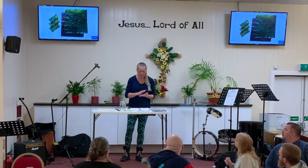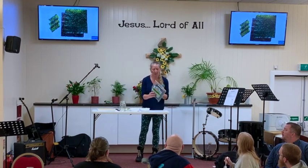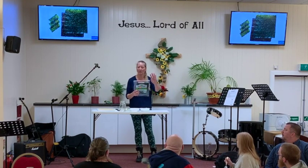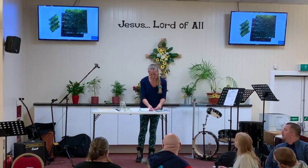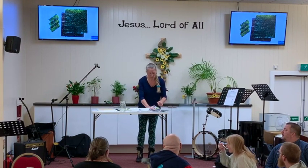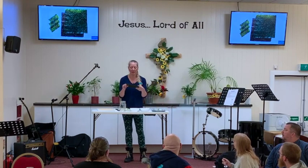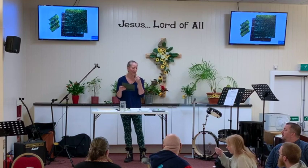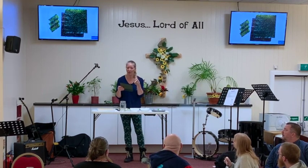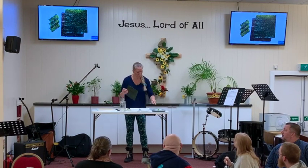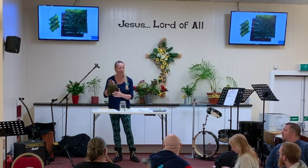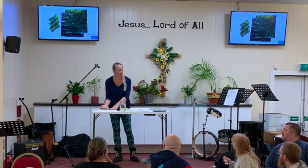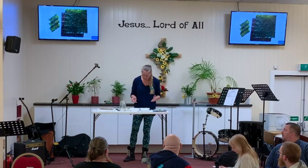Nori are thin sheets of seaweed that have been dried and then typically roasted. You can find them at Tesco — they've got a nice Asian section with most of the ingredients we're using today. You can also buy them in little squares, further toasted and salted — real crispy. There are two sides to nori: a coarse side and a shiny side, and you always roll your sushi with the shiny side down.